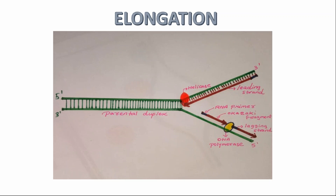In elongation, the two strands have been separated. DNA polymerase will add the dNTPs. The dNTPs are added in the 5' to 3' direction, while DNA polymerase reads the template strand in the 3' to 5' direction.